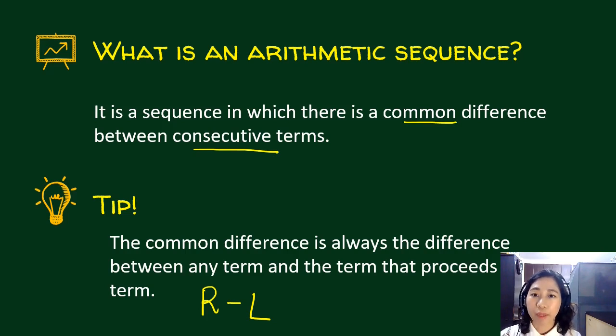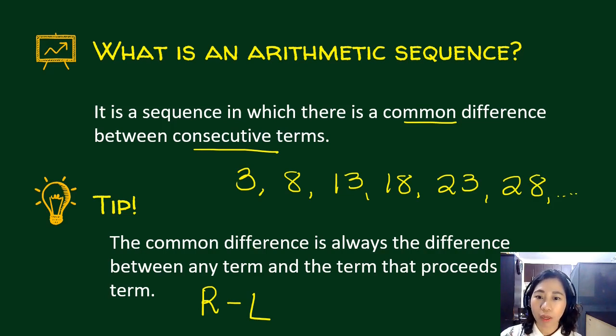So a simple example of an arithmetic sequence would be 3, 8, 13, 18, 23, 28, and so on. Now in this case, what will be our common difference? You get the consecutive terms. So for example, 3, 8 - right minus left. So what is that? 8 minus 3 is 5. 13 minus 8, you get 5. 18 minus 13, you get 5.